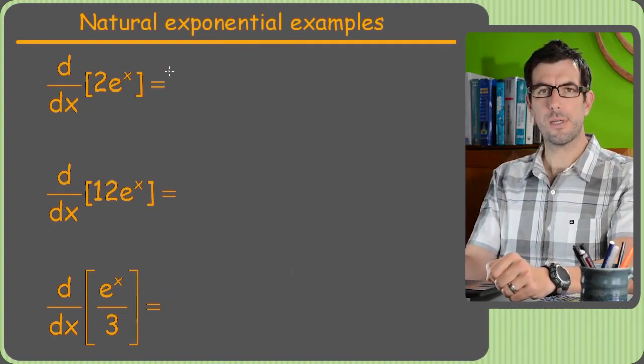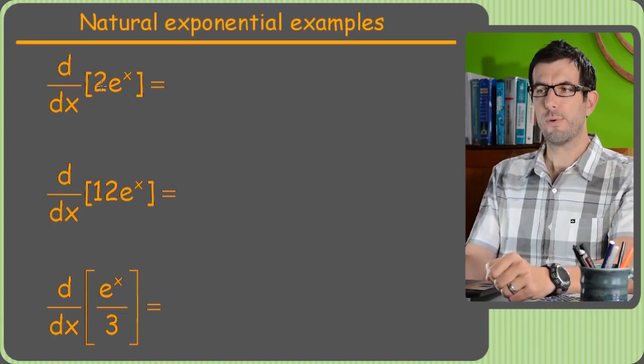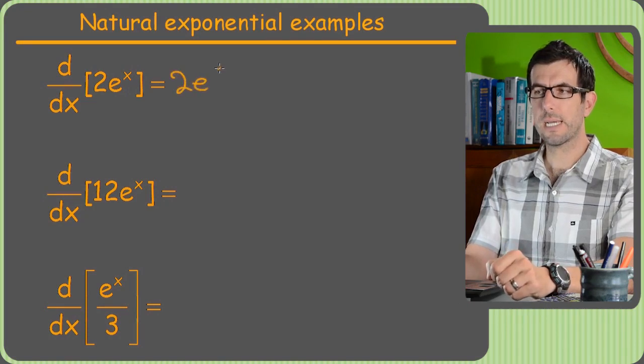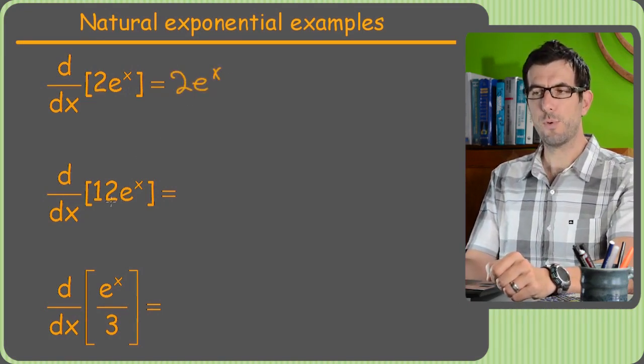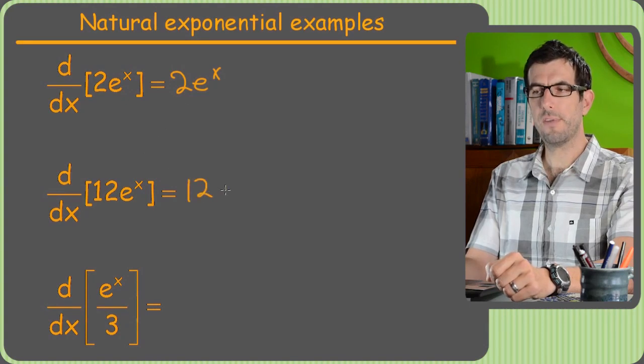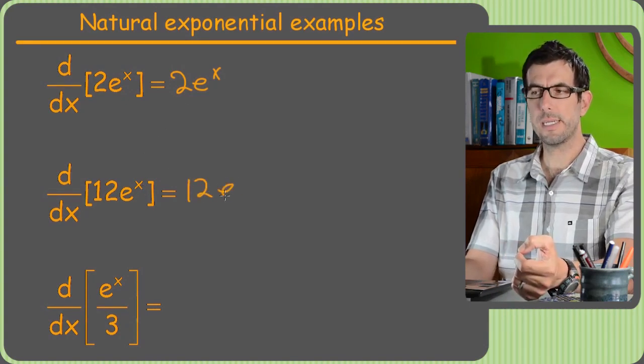Alright, so let's just do a couple quick examples. The derivative of 2 times e to the x is 2 e to the x because you just keep the 2. The derivative of 12 times anything is just keep the 12, and then the derivative of e to the x is e to the x.